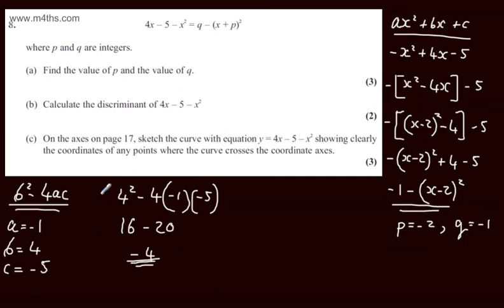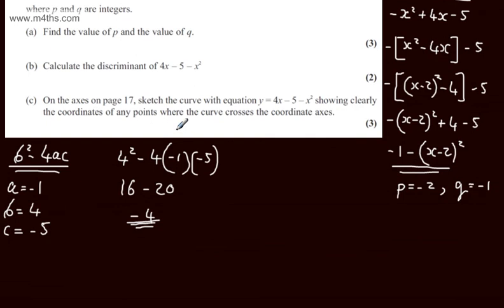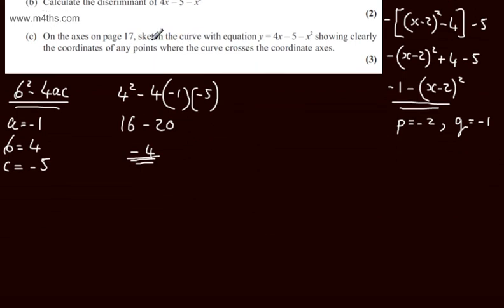In part C, it says on the axes on page 17, sketch the curve with equation y equals 4x minus 5 minus x squared, showing clearly the coordinates of any point where the curve crosses the coordinate axes. The question carries 3 marks. We can put it in this form, or I could write this now as x minus 2, and we would square the bracket, we'd have minus the quantity minus 1.